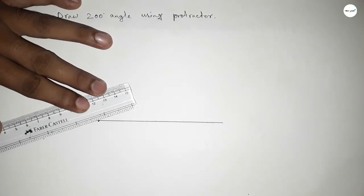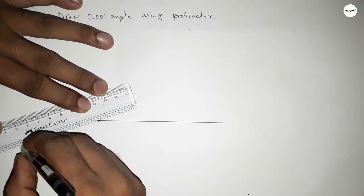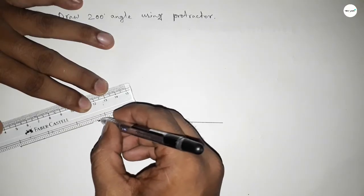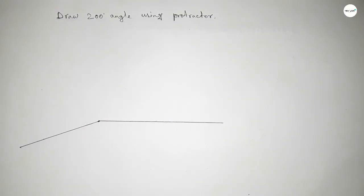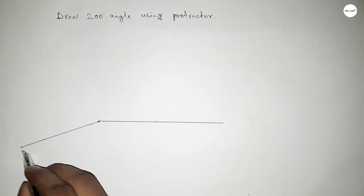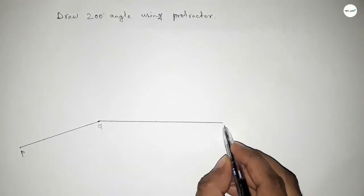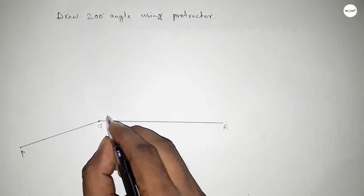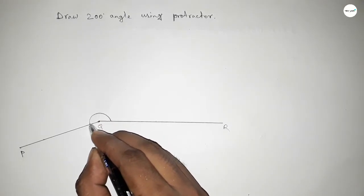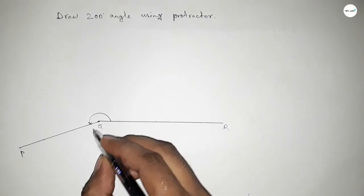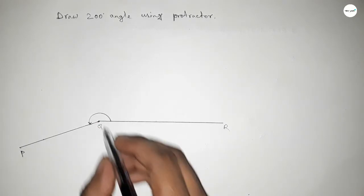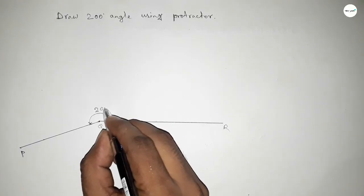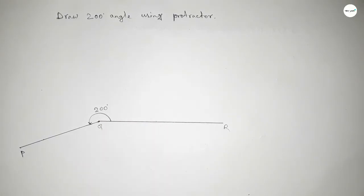Okay, so we got 200 degree angle by joining this line. Okay, so this is P, Q, and R. So angle PQR is 200 degrees. So this is 200 degree angle. Now therefore angle PQR...